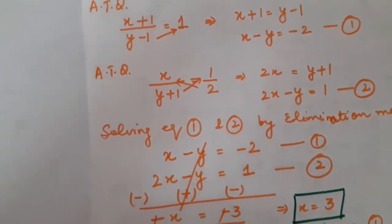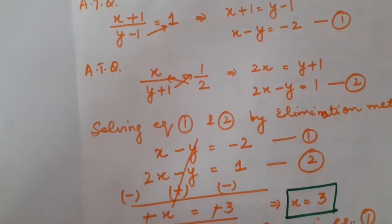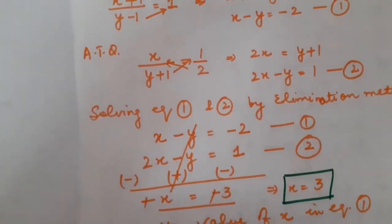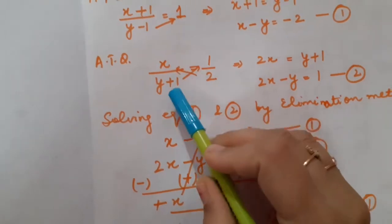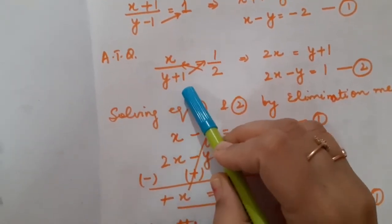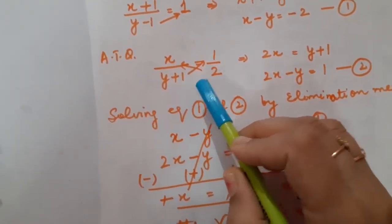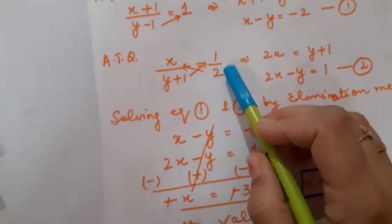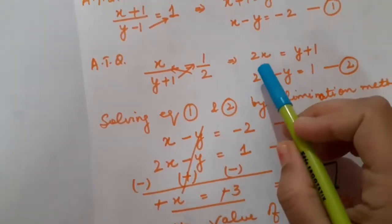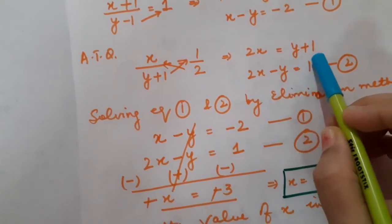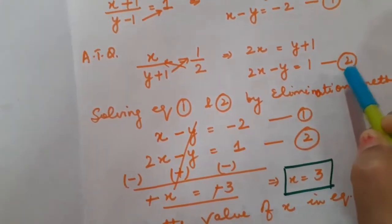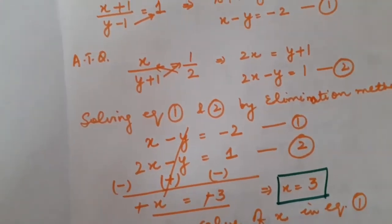The second condition: no change in numerator, means numerator remains x, but 1 is added to denominator making it y plus 1, and the fraction equals half. After cross multiplying, I have got 2x equals y plus 1, so 2x minus y equals 1. This is equation number 2.